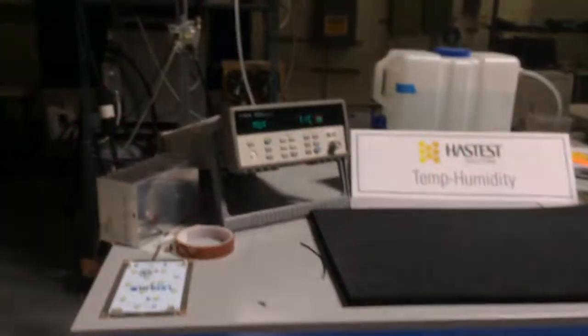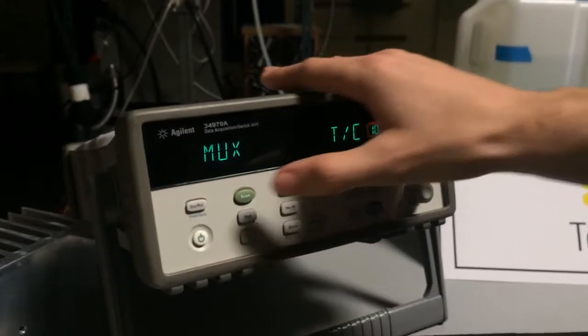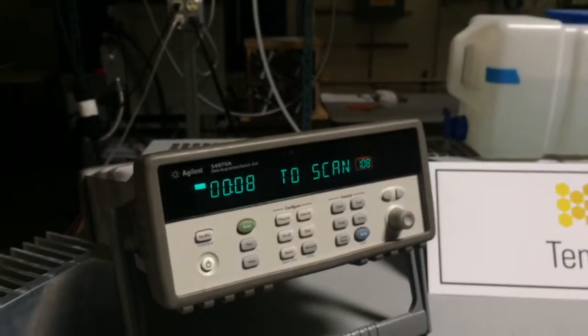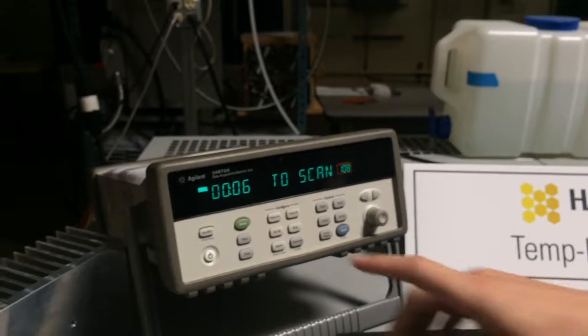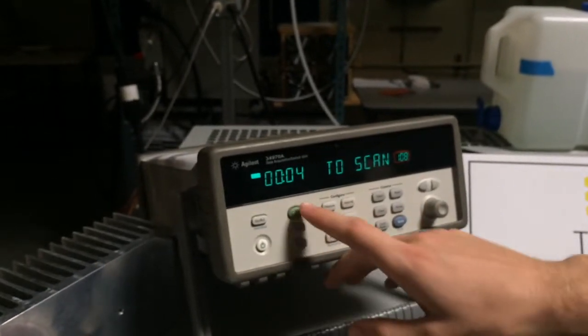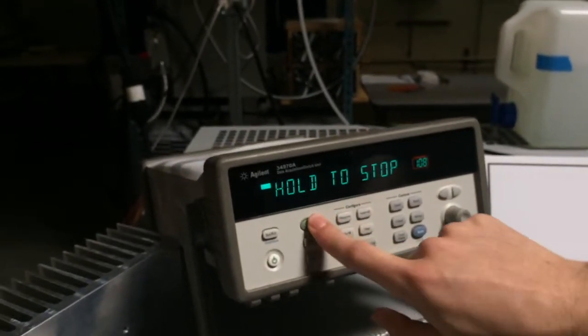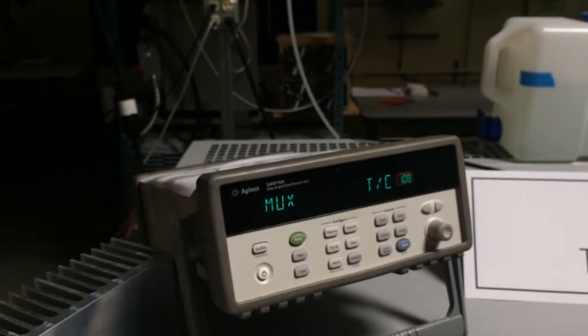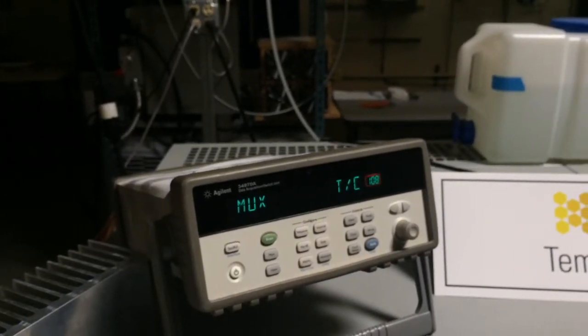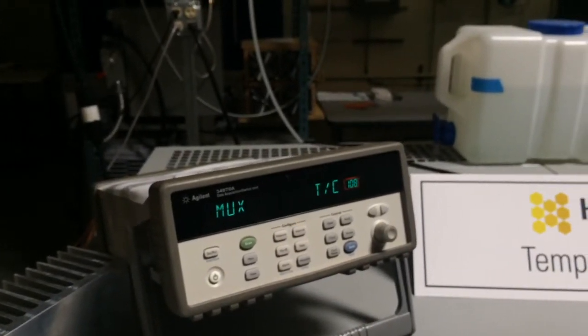We will begin collecting our data by pushing the scan button on our DAC. After the allotted time has passed, we will stop our scan, connect a USB to our computer, and import the data to our Keysight program.